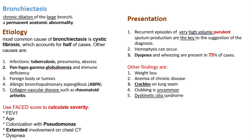Use the FAST score to calculate the severity of bronchiectasis. This score includes the forced expiratory volume in one second, age, colonization with Pseudomonas, extended involvement on chest CT, and dyspnea.